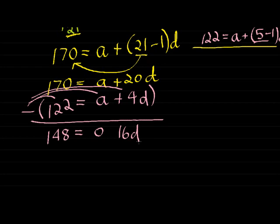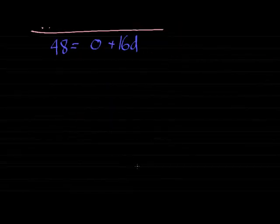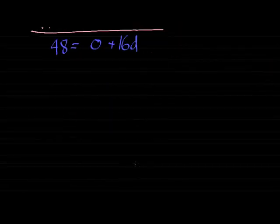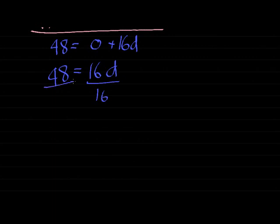So we're subtracting these two equations. We get the following answer: 170 minus 122 is 48. A minus A would be zero. 20 minus 4 would be 16d. And now we simply get to solve d. On both sides, if I just simplify it a little bit more, I get to divide with 16, and I get an answer for d as 3.